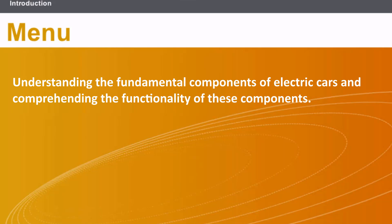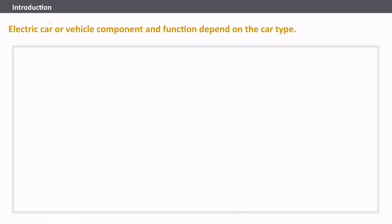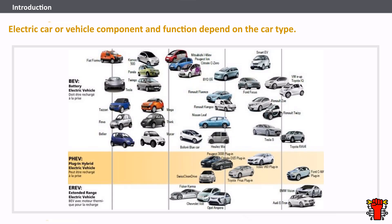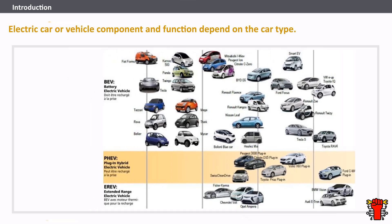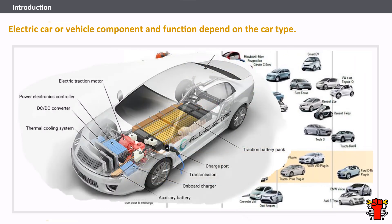This lesson will cover the fundamental components of electric cars and the functionality of these components. There are at least four types of electric cars currently sold commercially. This video will discuss various common major electric vehicle components and their functions, such as traction batteries, inverters, DC-DC converters, traction motors, onboard chargers, and controllers.